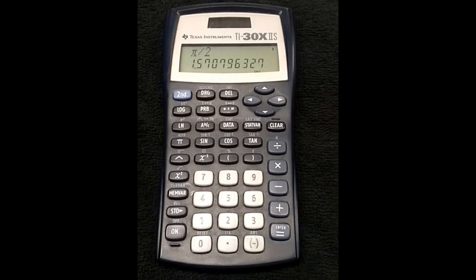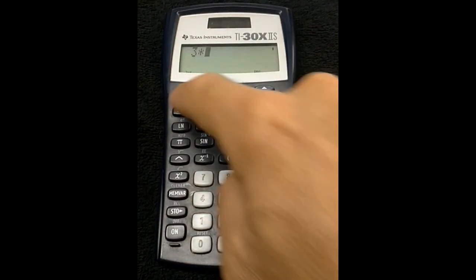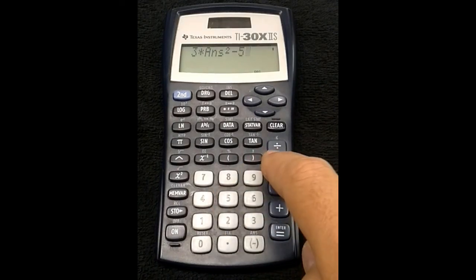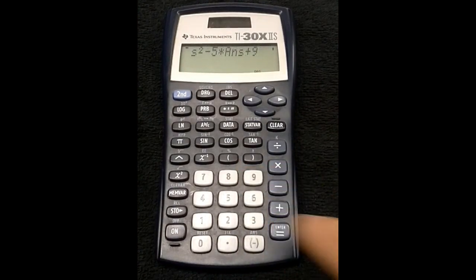Now let's take this number and enter it into the expression 3x squared minus 5x plus 9. Some people might write down this number from the calculator and re-enter it into the expression. But here's a better way. If you want to use the previous answer as part of a new calculation, use the answer function, found here above the negative number sign. So for this example, I will enter 3 times 2nd answer squared minus 5 times 2nd answer plus 9 and equals.